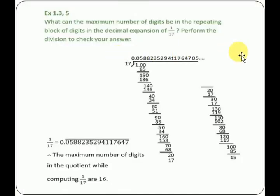This is Exercise 1.3, Question Number 5. What can the maximum number of digits be in the repeating block of digits in the decimal expansion of 1 by 17? Perform the division to check your answer.